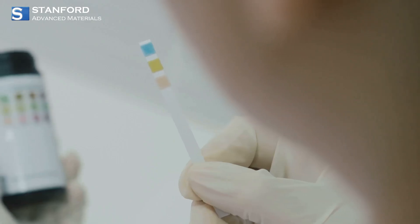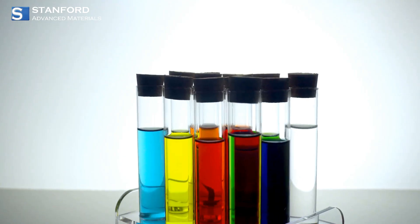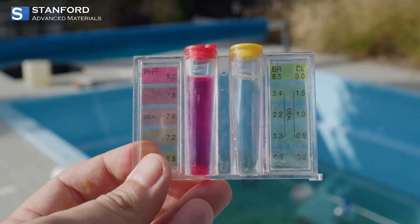Litmus tells us acid or base, while universal indicator shows just how strong it is using a color spectrum.